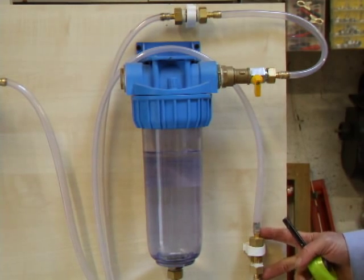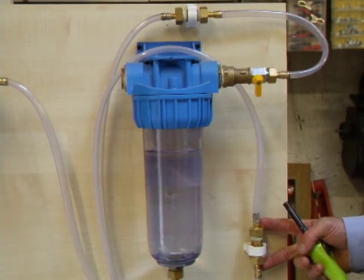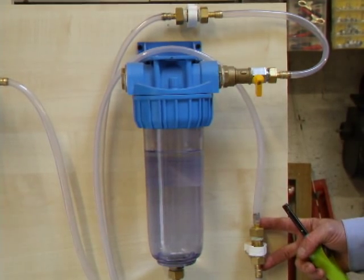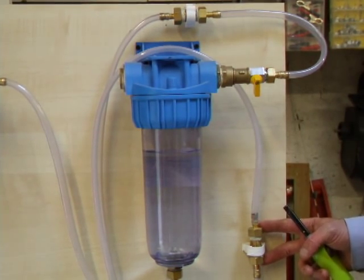The flashback arrester is built inside a standard three quarter inch plumbing fitting. It's basically just a little pipe packed with the aquarium stone.